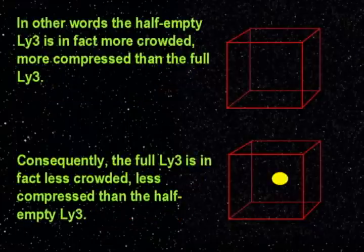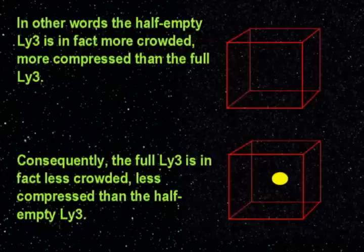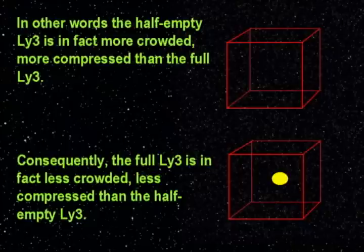In other words, the half-empty cubic light-year of space is in fact more crowded, more compressed than the full cubic light-year of space. Consequently, the full cubic light-year of space is in fact less crowded, less compressed than the half-empty cubic light-year of space.